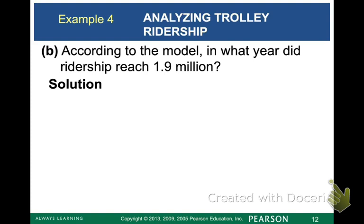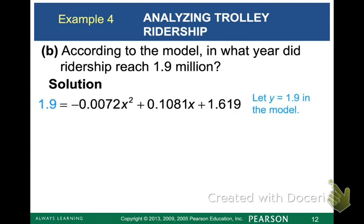Part B, according to the model, in what year did ridership reach 1.9 million. So now we're going to take 1.9 and we're plugging that in for Y because that stands for the ridership. And X is our variable for year. So plug 1.9 in for your Y value and we're going to solve this. Start by subtracting your 1.9 over and combining it with your 1.619.